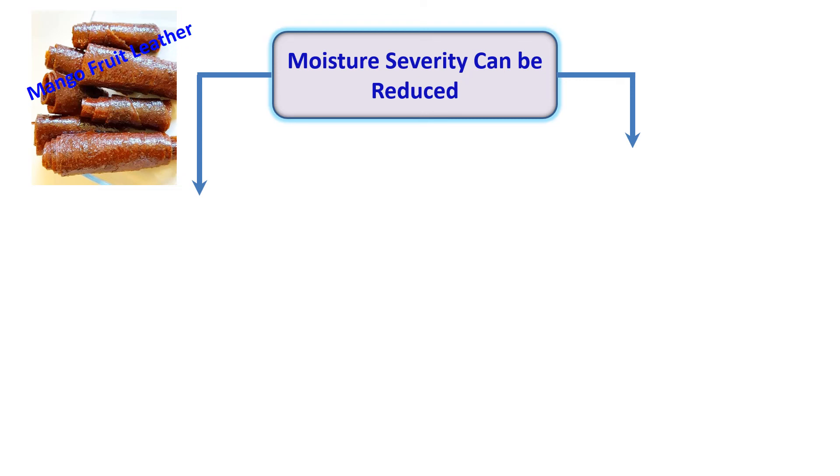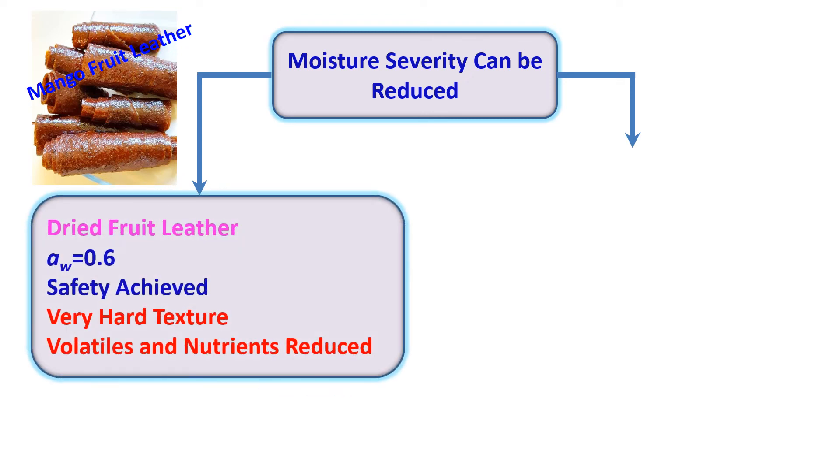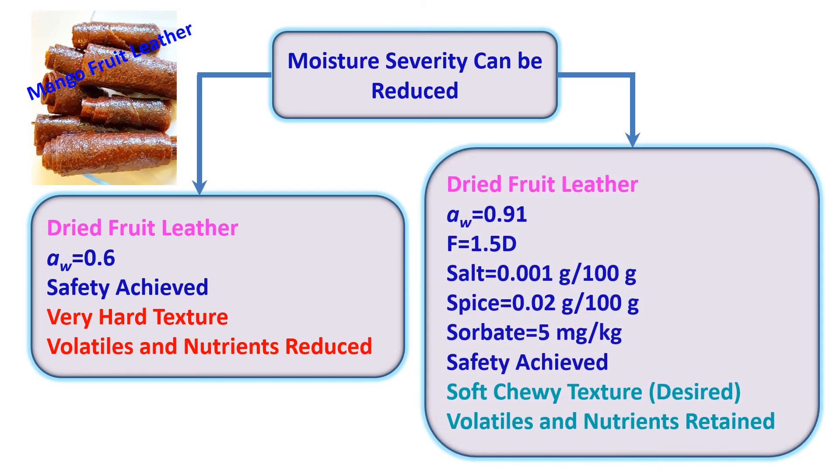I have already discussed the example of heat severity. Here I would like to explain the moisture severity in the case of fruit leather. We could have a fruit leather with water activity of 0.6 for microbial safety, but leather could be very hard and not chewy with significant loss of volatiles and nutrients. However, we could achieve the same safety at water activity 0.91. In this case, leather would be chewy texture with desired volatiles and nutrients. Different mild hurdles could be used, for example, mild heat treatment, salt, spice, and sorbate.